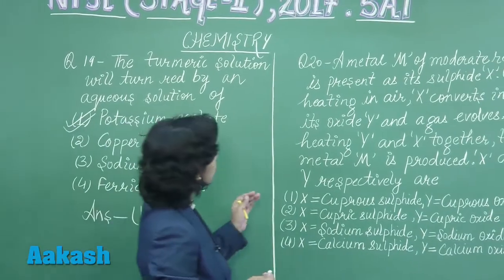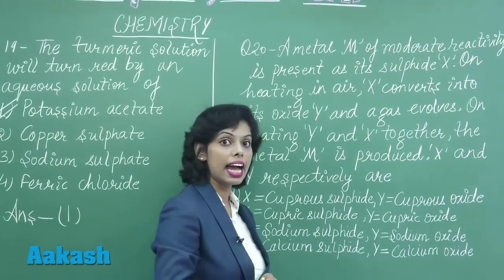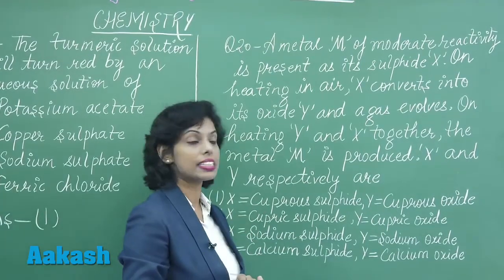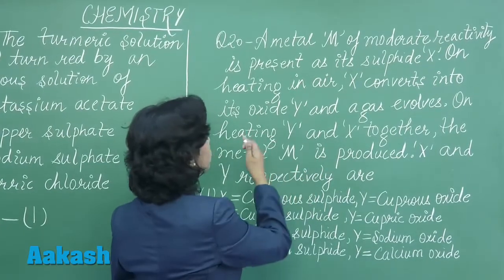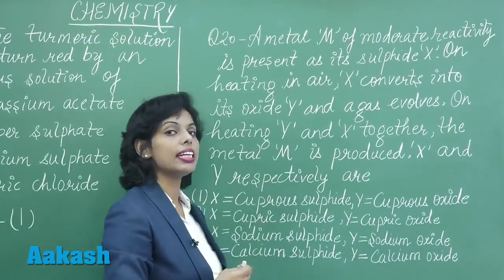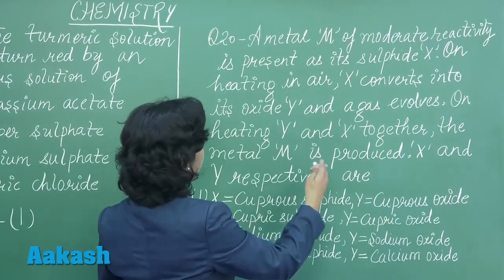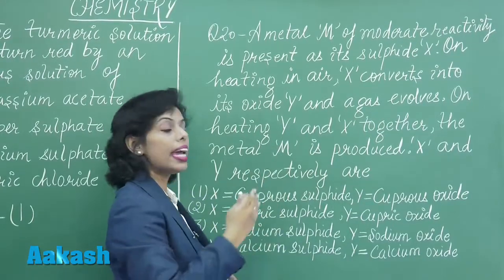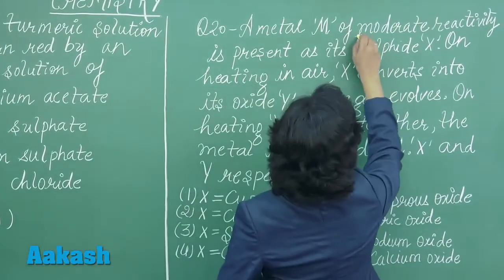Now let us move to question number 20. A metal M of moderate reactivity is present as its sulphide X. On heating in air, that sulphide X converts into its oxide Y, and a gas is evolved. Since we have a sulphide being heated, the gas sulphur dioxide is released. It is also said that on heating Y and X together, the metal M is produced.